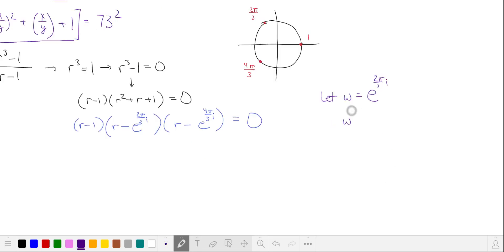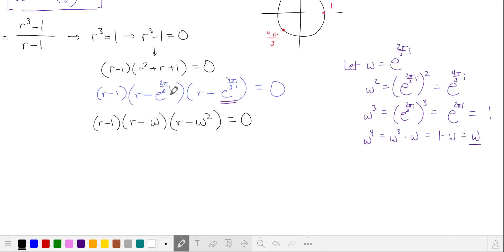If we let ω be e to the 2π over 3 times i, ω² means we just multiply the exponent by 2. That's our second root. ω³ means we take our exponent and multiply it by 3. This means our angle is at 2π, which means ω³ is equal to 1, which means ω to the fourth power takes us back to ω again. So let's rewrite these roots as ω and ω².